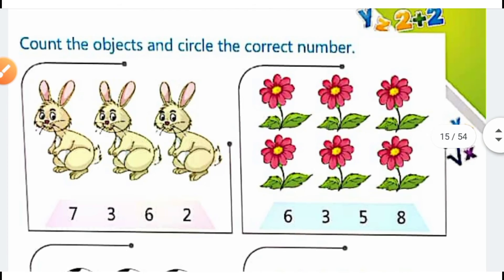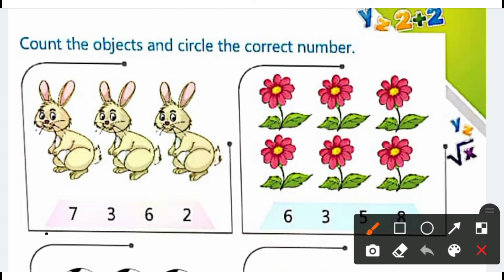Now what we have to do is count the objects and circle the correct number. We have to count the object and circle the given number.